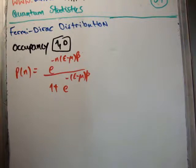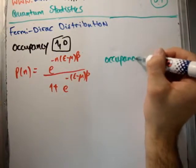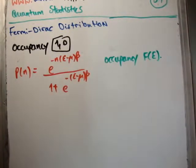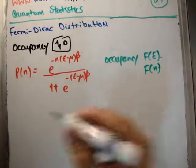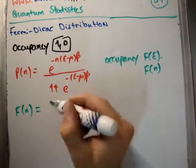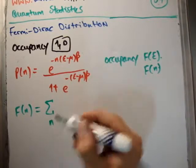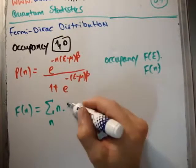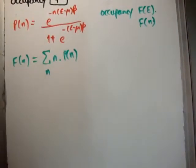We define the occupancy as being the average number of particles in a state. We'll give it f of n. That means f(n) is the average number in a state. This is the sum over n times n times the probability of that occurring. That's just the average - look at my video on average values if you don't understand that. Pretty straightforward.